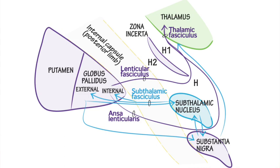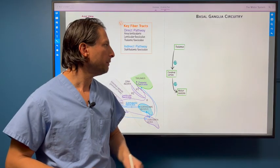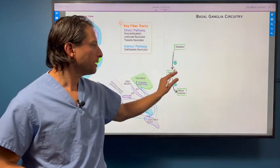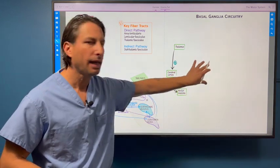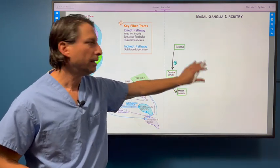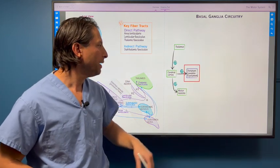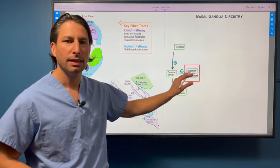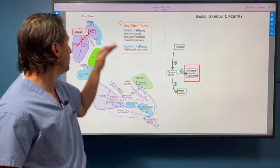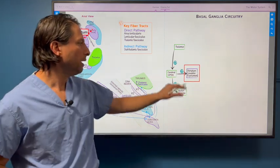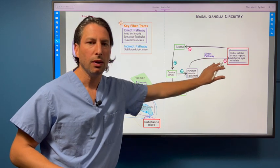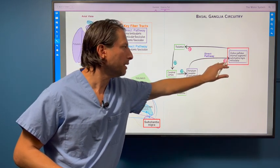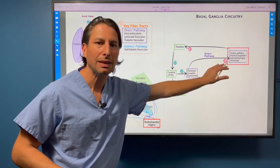Now we're ready to walk through this basal ganglia circuitry. The thalamus excites the cerebral cortex, which excites motor neurons. The basal ganglia is the engine that acts on all of this. So the cerebral cortex excites the striatum, which again is this caudate putamen. And then via the direct pathway, there's inhibition of the globus pallidus internal segment and the substantia nigra pars reticulata.